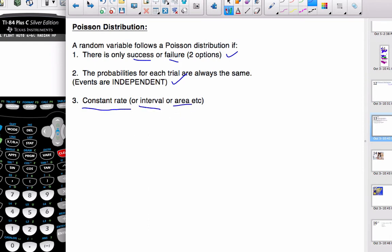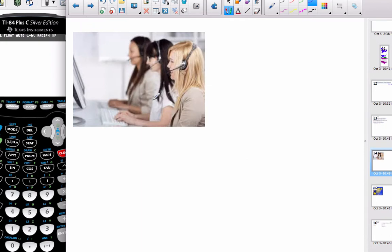Let me give you an example. Here we have an operator on the phone. On average, she gets five calls per ten minutes. This is a rate - five calls per ten minutes. If we're going to say, what's the probability of her getting seven calls in ten minutes? That would be a Poisson scenario where there's a rate that is apparent.